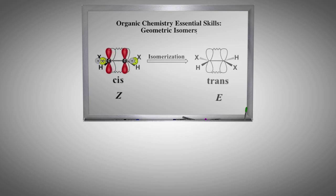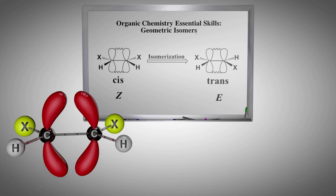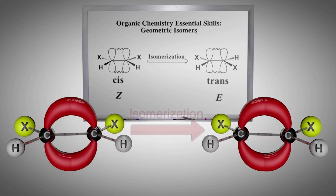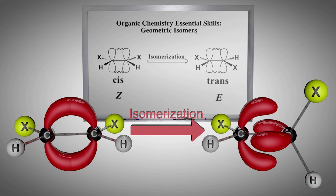For interconversion of the isomers to occur, we need free rotation about the C-C double bond. If this were to happen, the pi bond would have to break, which requires approximately 70 kcal per mole. This will cause each carbon to lose full valency due to the 2p orbitals no longer overlapping.